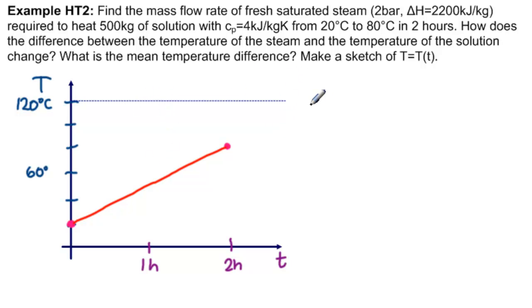So from the graph, how does the difference between the temperature of the steam and the temperature of the solution change? Well, here the temperature is 120 minus 20, so 100 degrees. Here the temperature is 120 minus 80 degrees, so only 40. So the difference decreases.